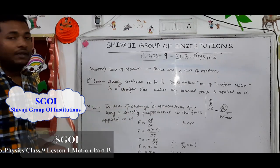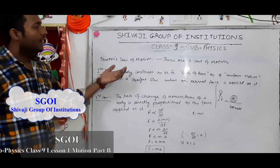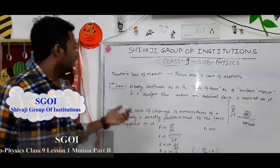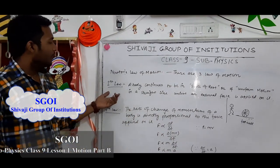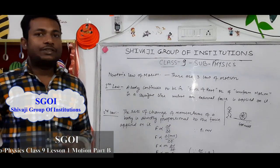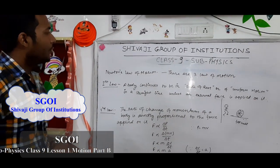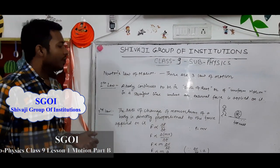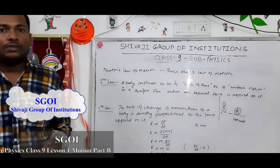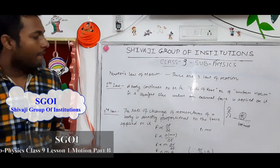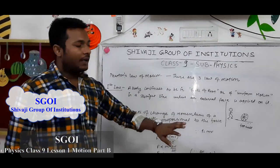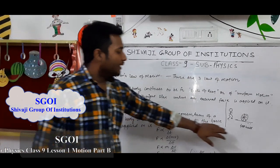Let's see what are Newton's laws of motion. There are three laws of motion of Newton. The first law of motion states: a body continues to be in a state of rest or of uniform motion in a straight line unless an external force acts on it.